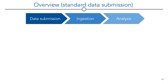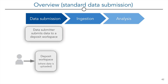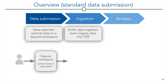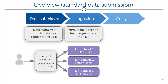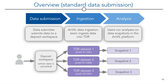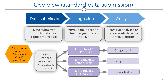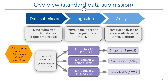This is a high-level overview of the typical data submission process on Azure. First, the data submitter submits data to a deposit workspace. Next, the Anvil data ingestion team ingests data into TDR — note that different consent groups within a deposit workspace are separated into different datasets. Last, the Anvil data ingestion team creates immutable or static snapshots that will then be findable in the Anvil data explorer. Submitting incremental data follows the same flow, with the data submitter depositing new data to a new deposit workspace. The Anvil team then ingests the data to an existing dataset and creates a new snapshot.